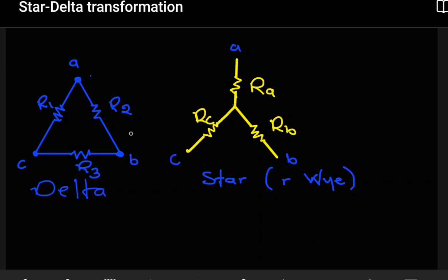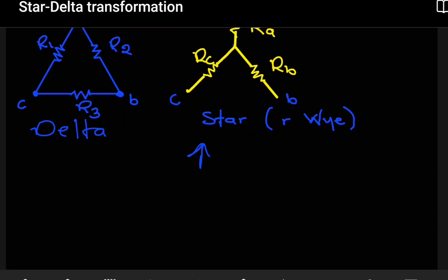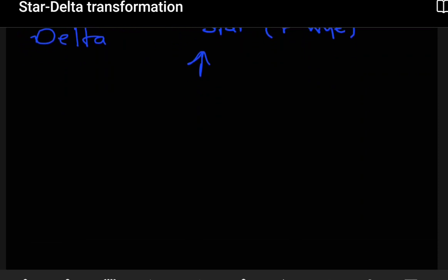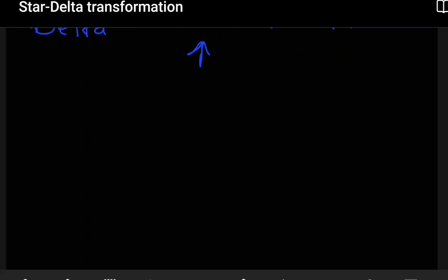We have a shape of a delta here and a shape of a star here. If you're trying to convert from something that looks like this into a delta, we're going to start by redrawing our star into a delta, or drawing a delta around that star. Once we've done that, we'll see a relationship or a formula that we're going to be using. The notation that you use for your formula really depends on the letters that you assign.